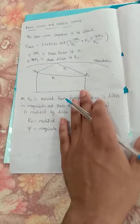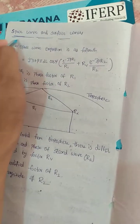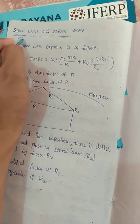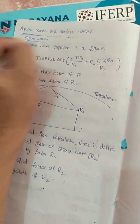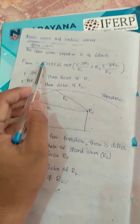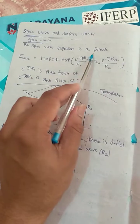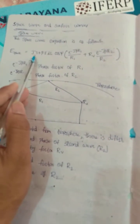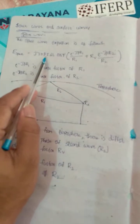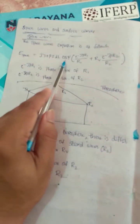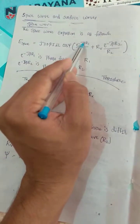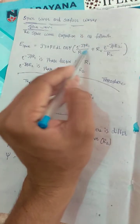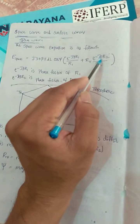Next, we discuss space waves and surface waves, starting with space waves. The expression for space wave is: E_space = j30·β·I·dl·cos(ψ) · [e^(−jβr1)/r1 + Rv · e^(−jβr2)/r2].